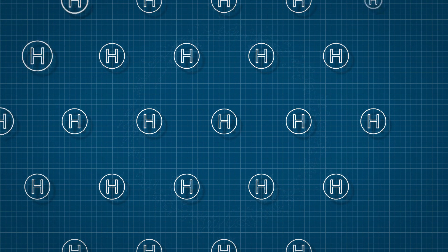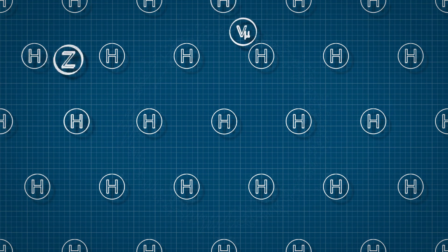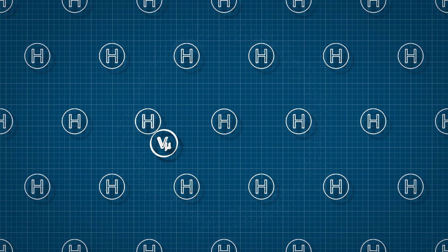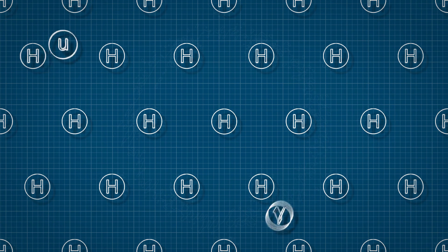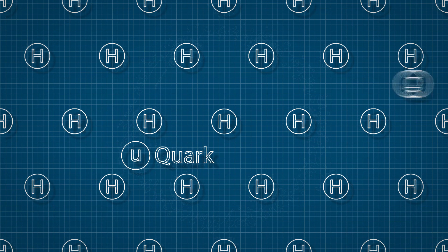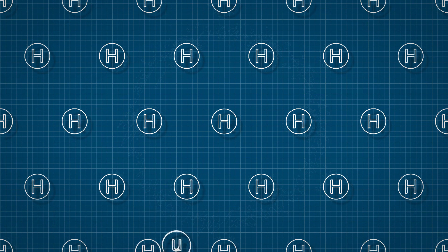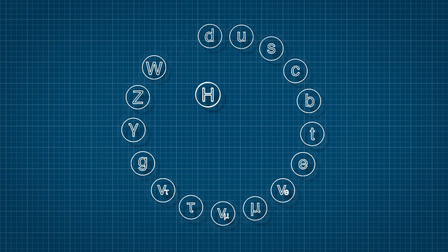All subatomic particles pass through and interact with the Higgs field. Some of these particles, like photons, whizz through and barely interact with it, resulting in very small mass. Other particles like quarks drag through and interact with the field a lot, which results in a larger mass. With this, the Higgs boson is able to successfully fill in the hole in the standard model.